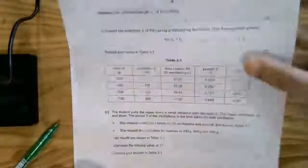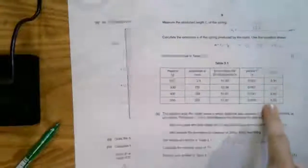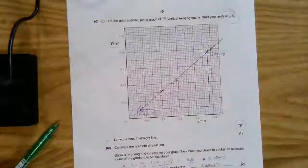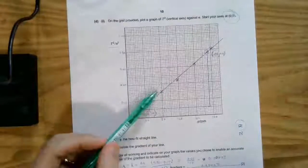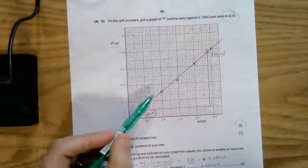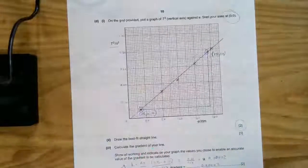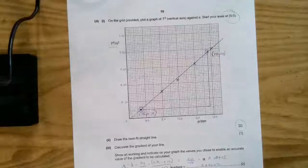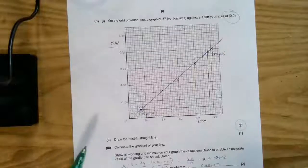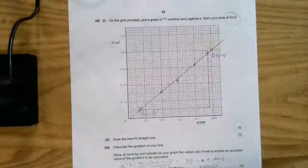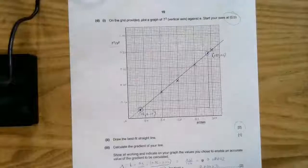These points are really nasty ones because we've got quite a lot of significant figures. So in the marking, actually, you've got to plot four points. They allow you to have one of those wrong, which is quite a nice thing for them to allow us. Usually you've got to get them all correct.